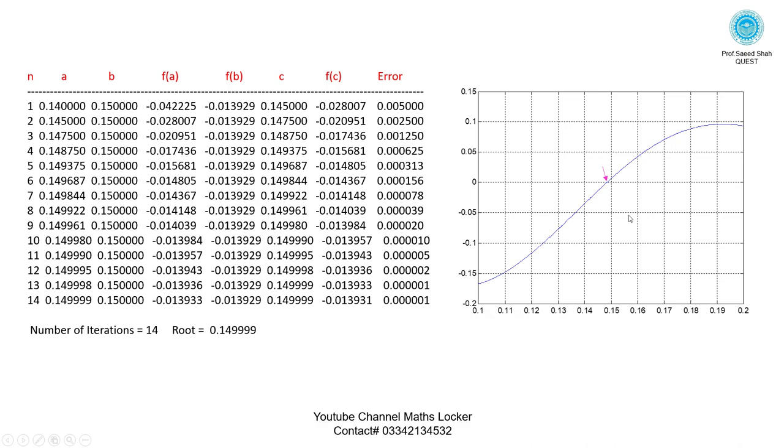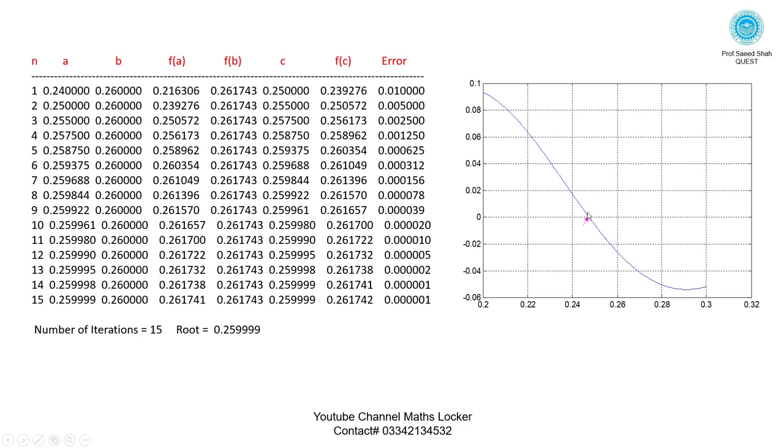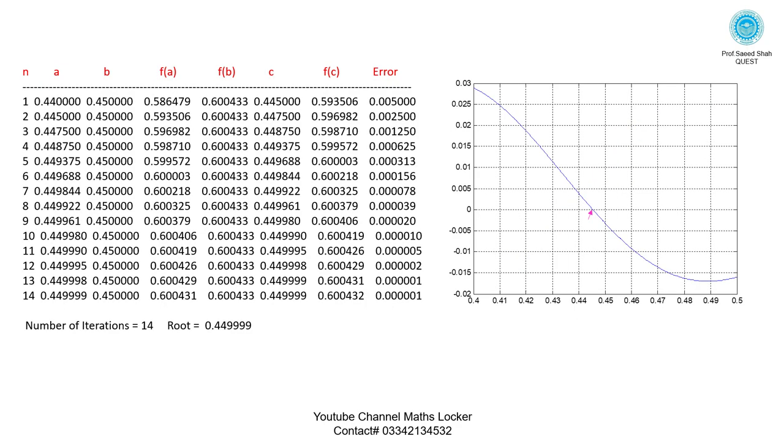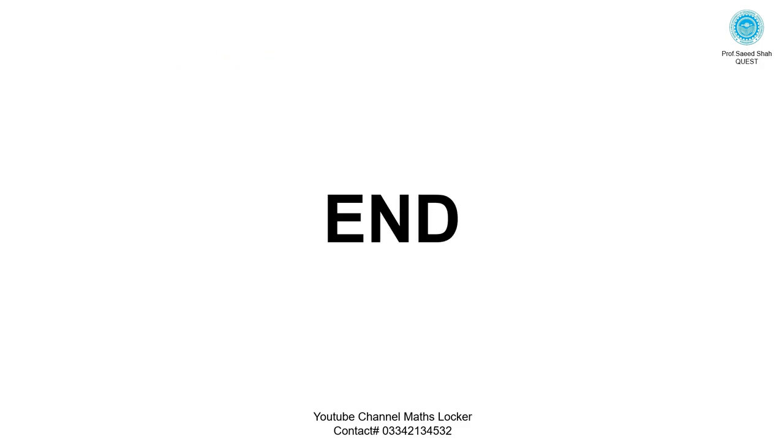Similarly, we can calculate the root which is lying between 0.14 and 0.15 using bisection formula. Again we can calculate the root lying between 0.24 and 0.26. We can calculate all roots, all compression times, by using the bisection formula. End of the lecture.